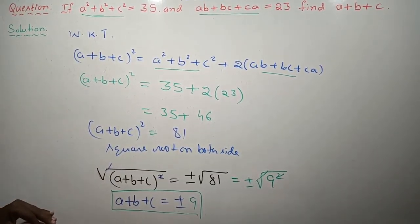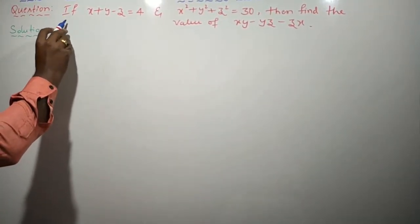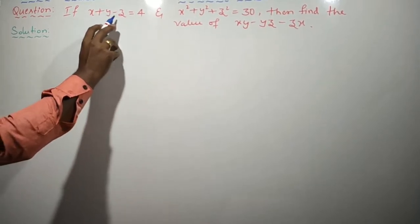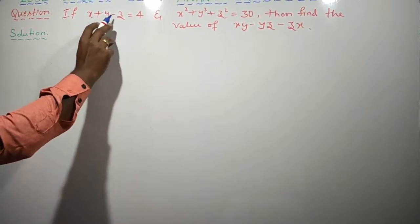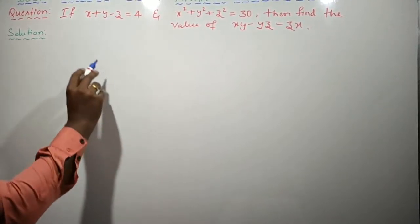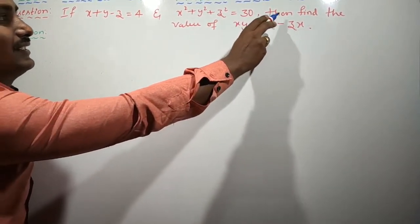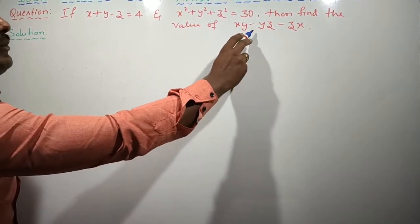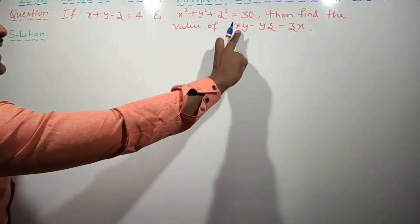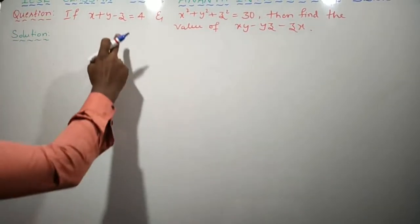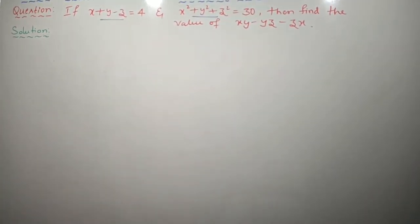Understanding! Let's do one more similar problem. I will read the question: If x plus y minus z is equal to 4, and x squared plus y squared plus z squared is equal to 30, then find the value of xy minus yz minus zx. By using these two given values, we are going to find this value. How to find it, children?